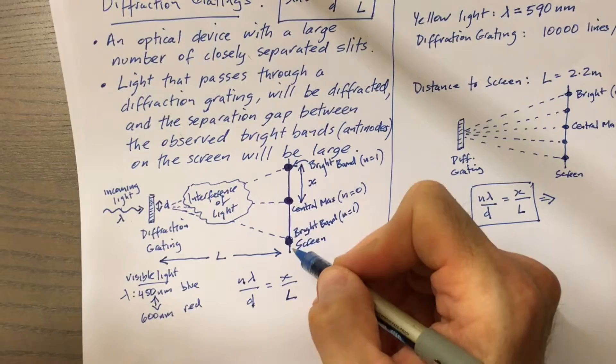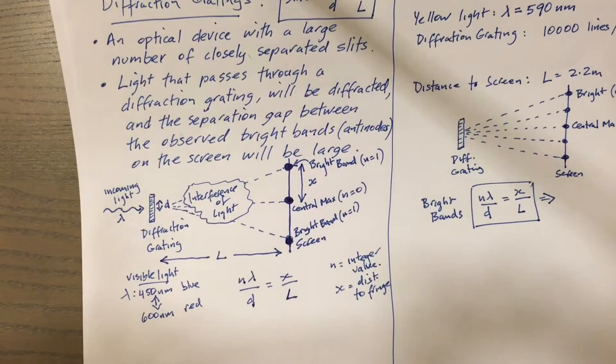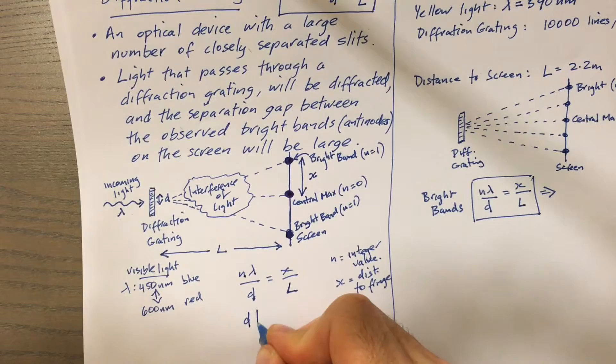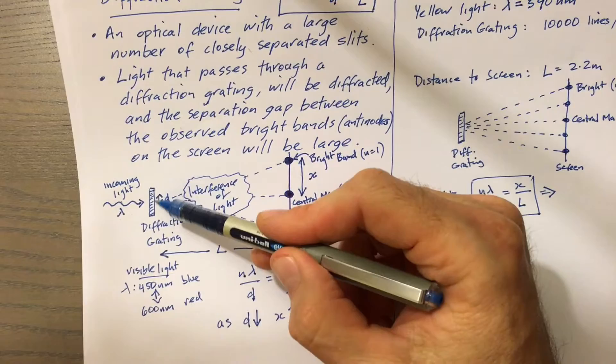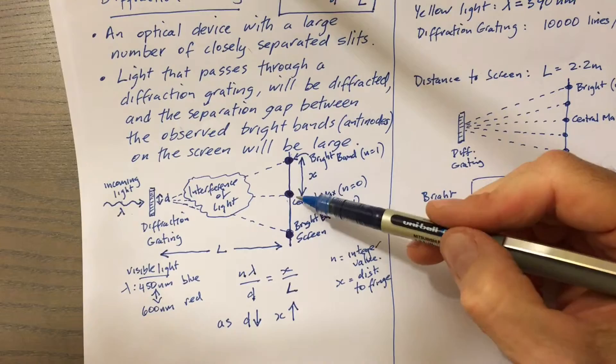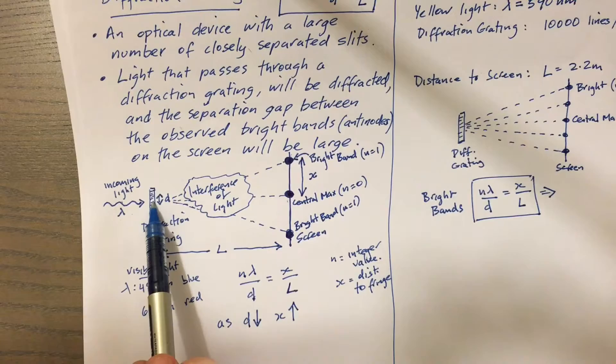L of course is the length from the slits to the screen. So here if we have our grading here, we have our screen here where we're projecting an image of the interference of the light, then L is that distance. Coming back to what I was saying before, if d is really small, then x will increase. So the smaller the gap between the slits, the bigger the distance between these bright bands. In fact diffraction is really enhanced by a very small gap between the slits.